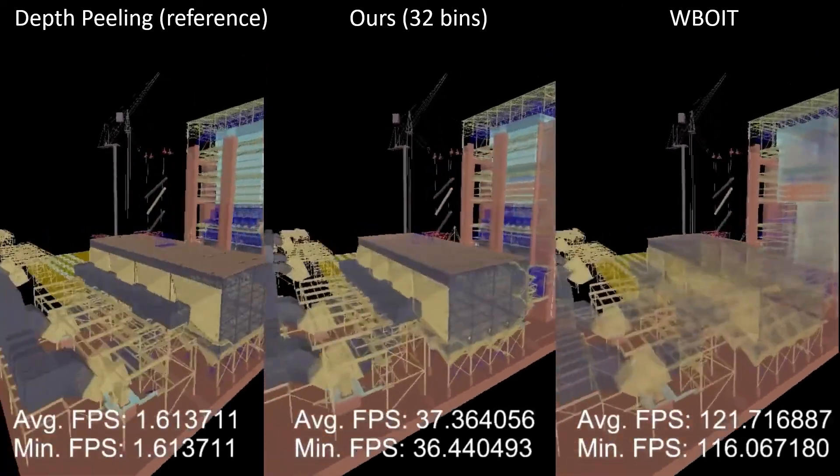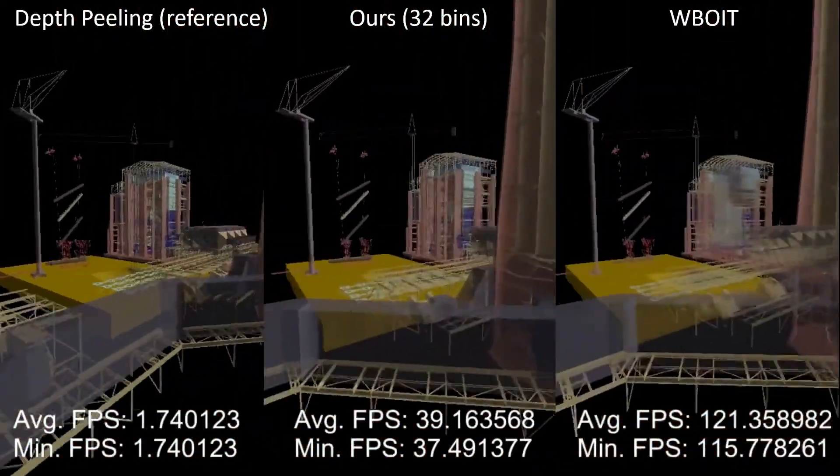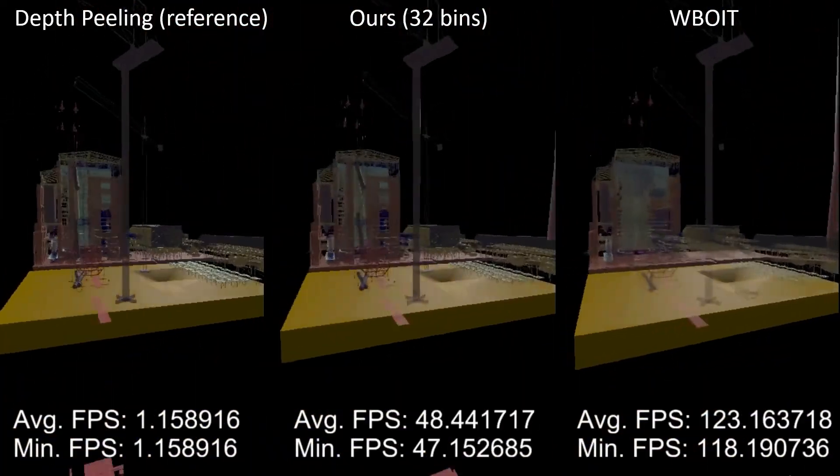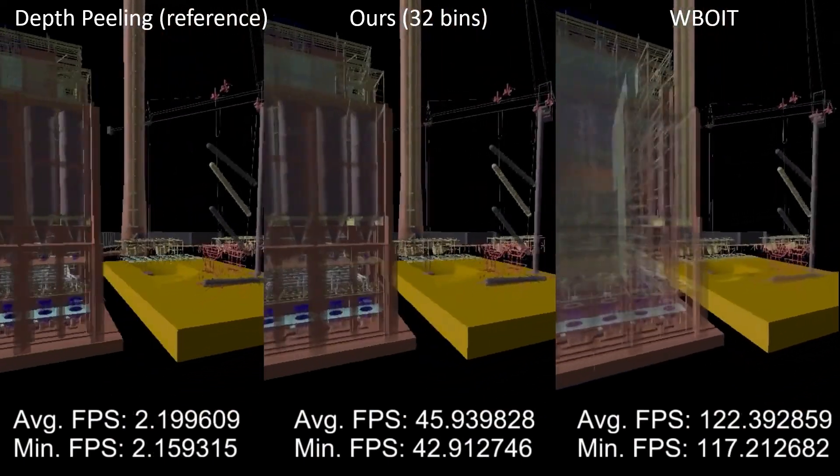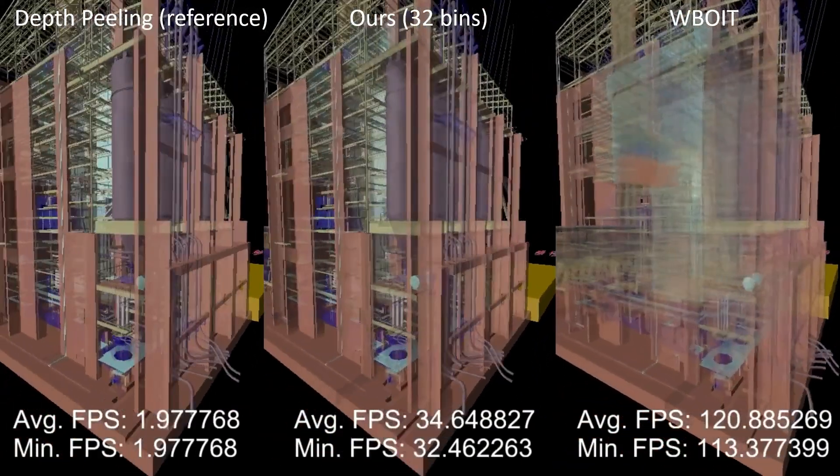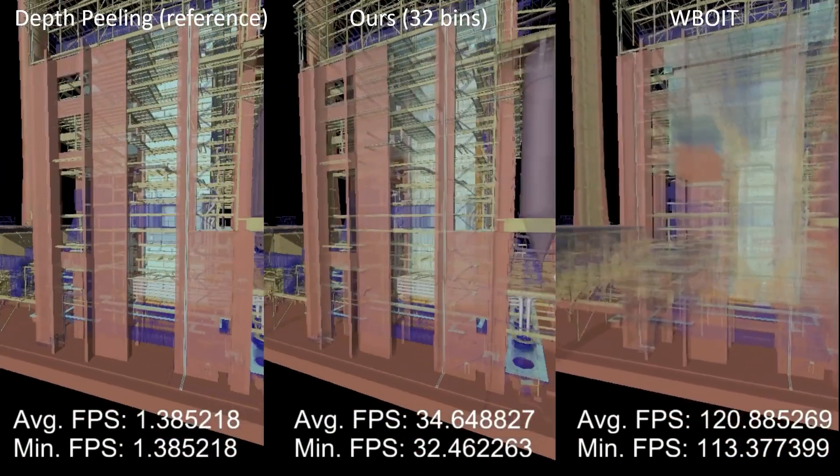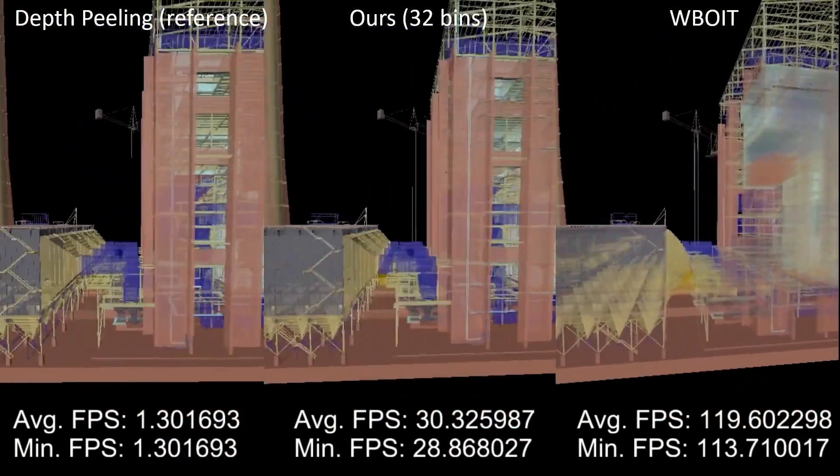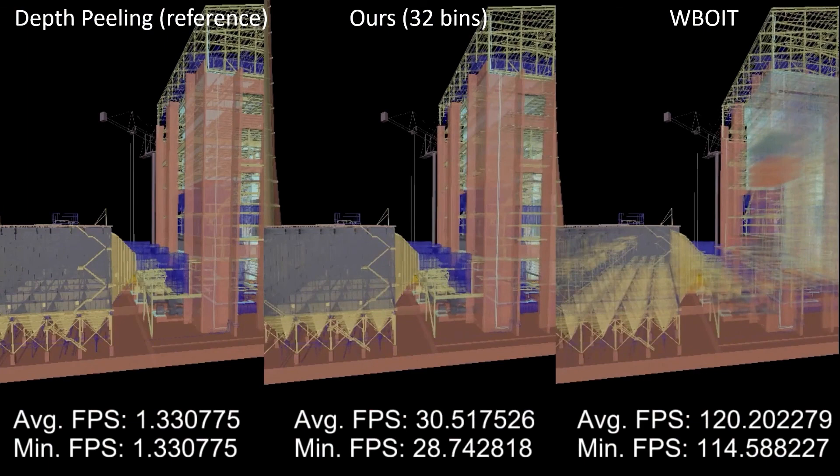For comparison, we rendered the famous power plant model using three methods: first with depth peeling as a reference, then with our technique using 32 bins, and then with the weighted blended operator. In this highly complex part of the model, we can see that our method retains a lot more detail compared to the weighted blended operator, while also retaining real-time frame rates on commodity hardware.